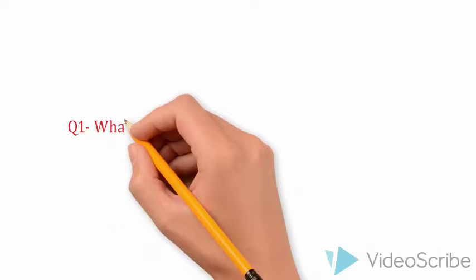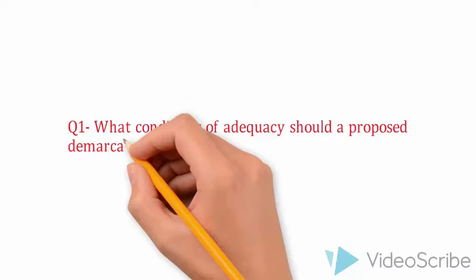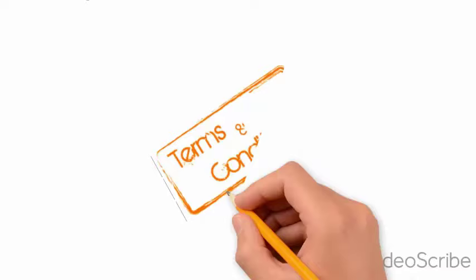Demise of demarcation: Then came Laudan and asked three important questions regarding the demise of demarcation, and he provided the answers to them as the following. The first question goes like that: What conditions of adequacy should a proposed demarcation criterion satisfy? He replied: the scientific community puts the conditions and terms to decide what is scientific.